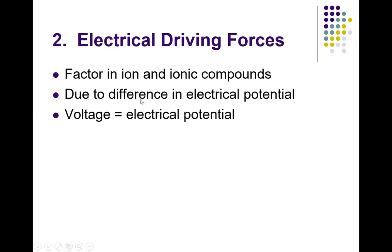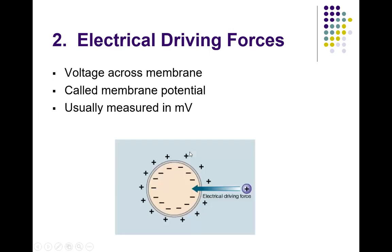Inside cells are negatively charged in a normal healthy cell, and outside the cell is positively charged. If something is positive, it's attracted to the negative interior because of opposite charges. The plasma membrane separates those charges — you need a difference in charge inside and outside. That's membrane potential, typically measured in millivolts, which is one-thousandth of a volt.